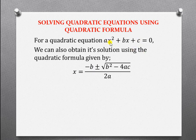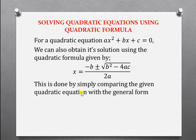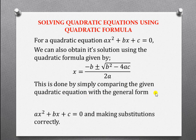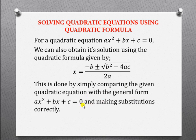So after getting the values of ABC from your quadratic equation, you simply come and substitute, then simplify and get the values of X and Y. So we are saying this is done by simply comparing the given quadratic equation with the general form AX squared plus BX plus C equals to zero and making substitutions correctly.